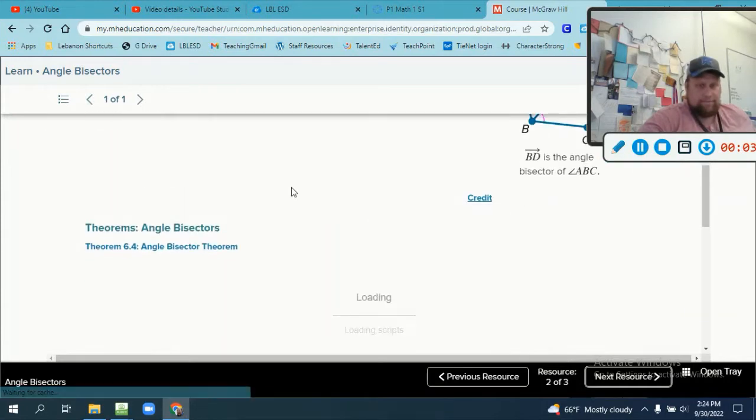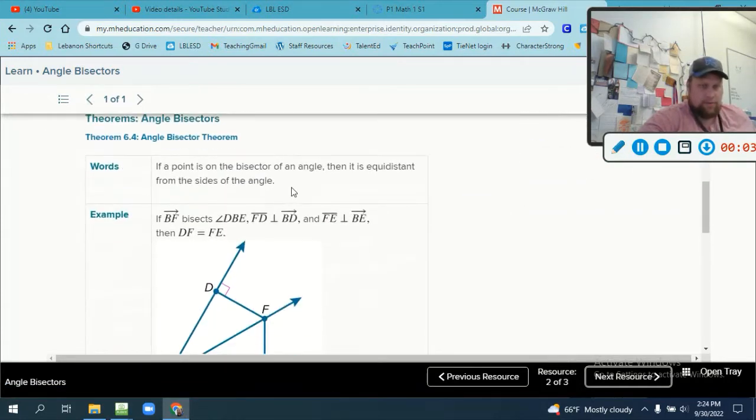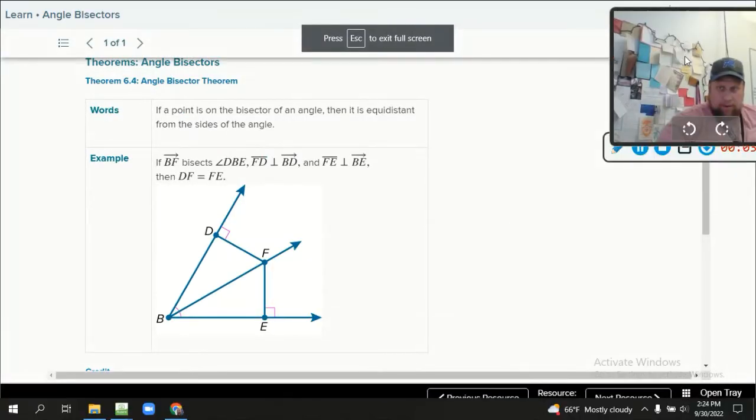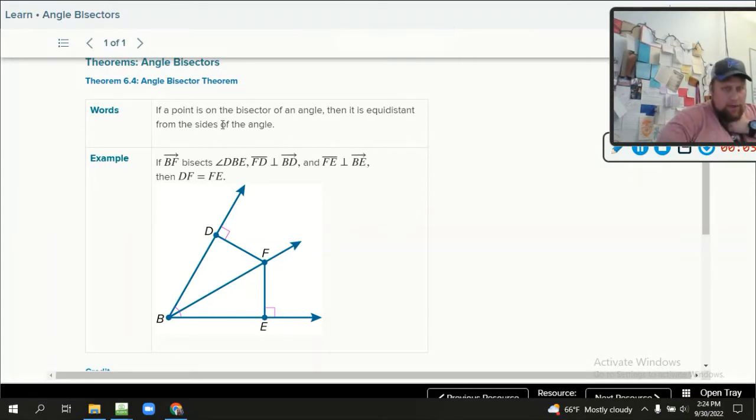So we're looking at the first one, which is Theorem 6.4, the Angle Bisector Theorem, which is actually pretty awesome. I'm going to make this big and move me around. It says if a point is on the bisector of an angle...